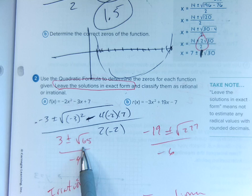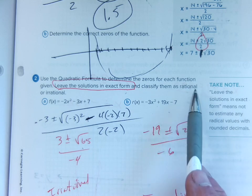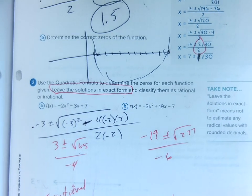Same thing with this one, they want us to leave it as exact form, so I left it as a square root of 277. They're both irrational numbers because that's what bad square roots are.